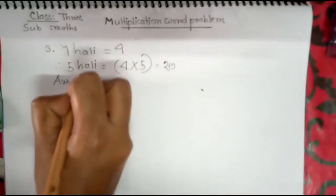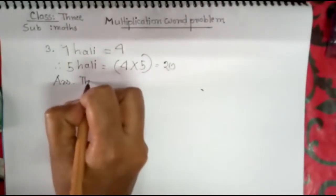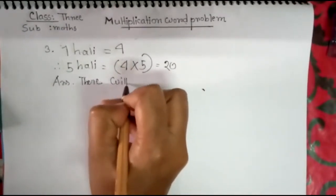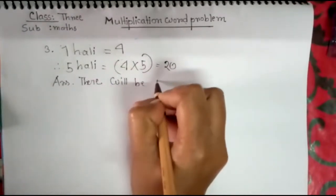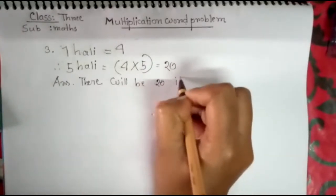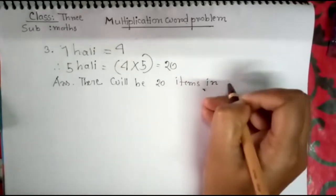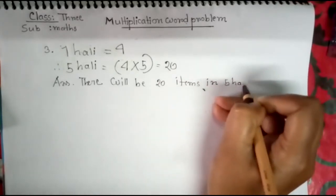Answer: There will be 20 items in five hali.